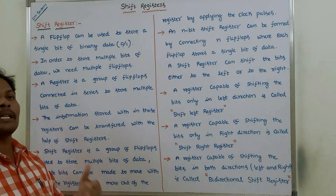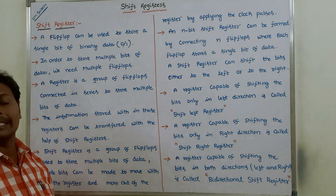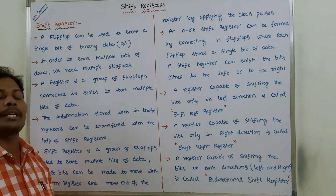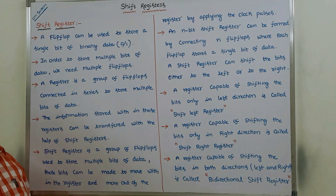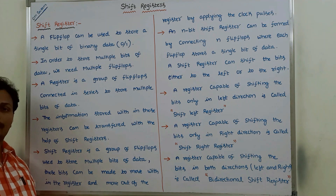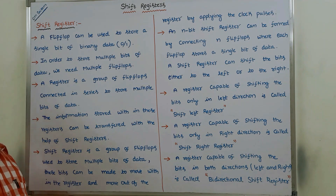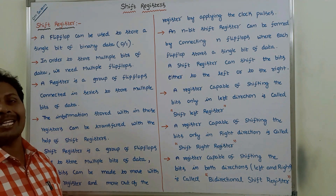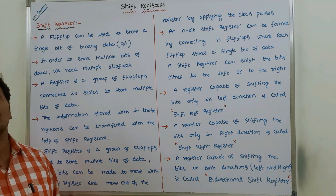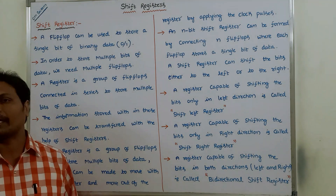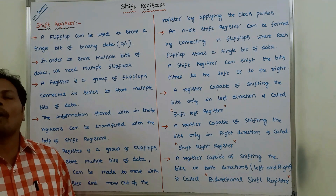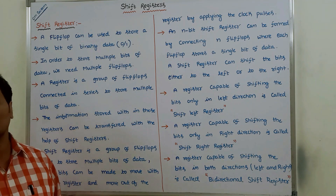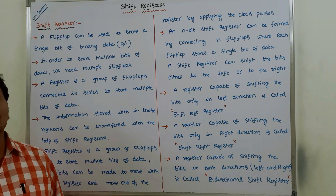Whatever data is stored within the universal shift register can be moved either in left or right direction. A register capable of shifting data in only one direction is called a unidirectional shift register. A register capable of shifting data in both directions is called a bidirectional shift register.